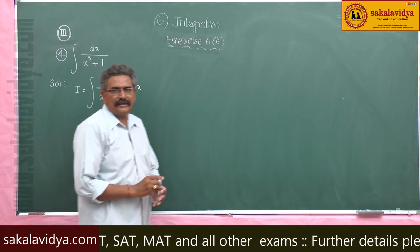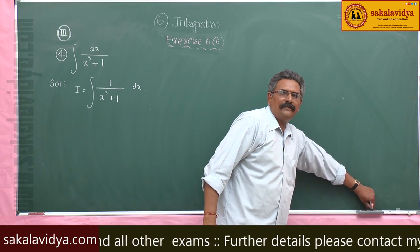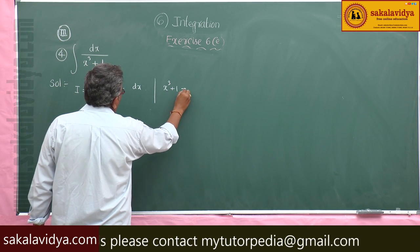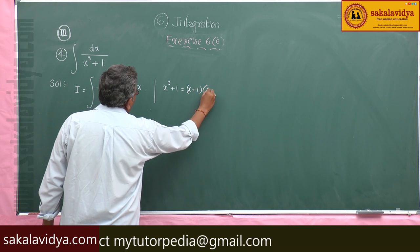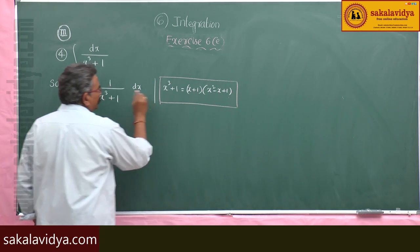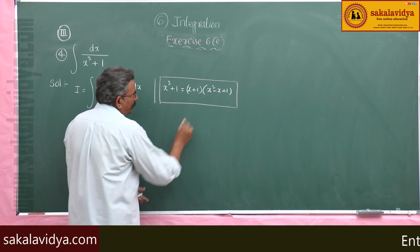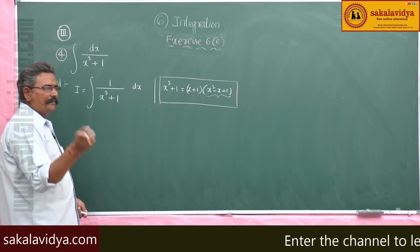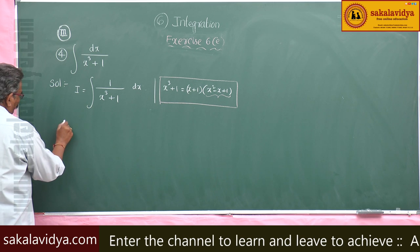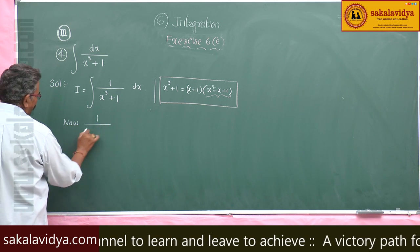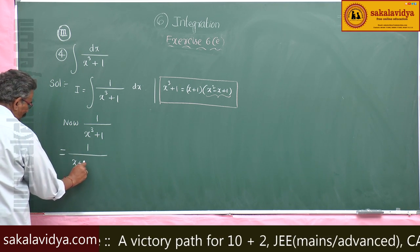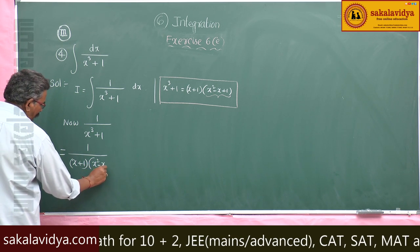Factors of x cube plus 1 — this is in the form of a cube plus b cube. We know that x cube plus 1 is equal to x plus 1 into x square minus x plus 1. So 1 by x cube plus 1 can be written as 1 by x plus 1 into x square minus x plus 1.